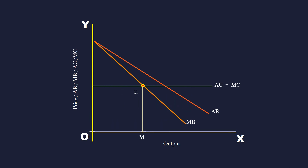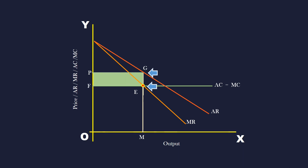But marginal cost is constant and is not increasing. Monopoly output is M and monopoly price is P. Its average revenue MG is greater than average cost ME. It earns supernormal profit represented by the area PGEF.